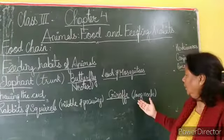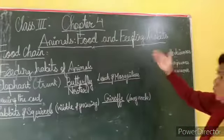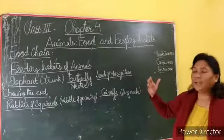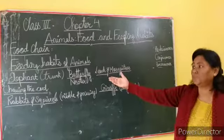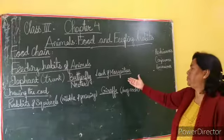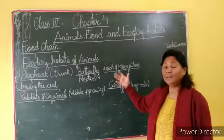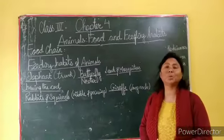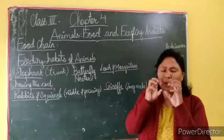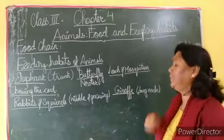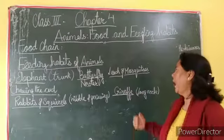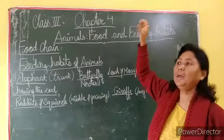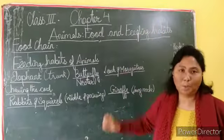So I have explained the food chain and feeding habits. I explained the elephant, the butterfly, how leeches and mosquitoes suck blood, what chewing the cud means, and how rabbits nibble and gnaw their food into small pieces. I also explained the giraffe, which uses its long neck advantage to eat leaves at the top of trees.